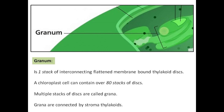A granum is one stack of interconnecting, flattened, membrane-bound thylakoid discs. A chloroplast cell can contain over 80 stacks of discs. Multiple stacks of discs are called grana. Grana are connected by stromathylakoids.